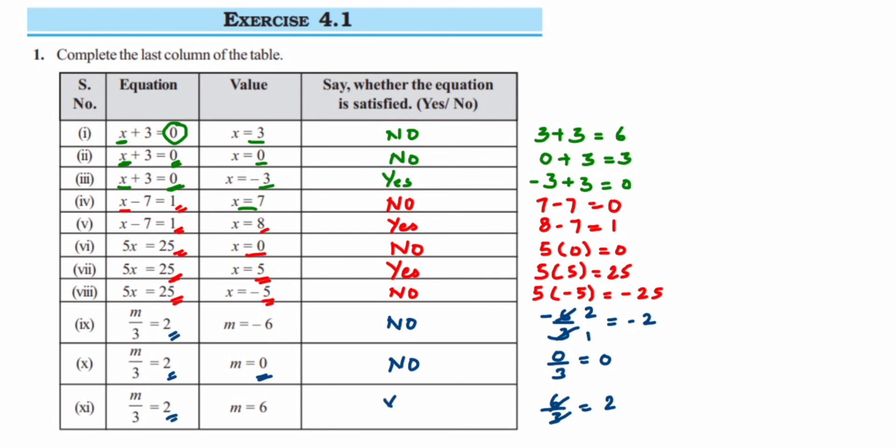So it was a very simple question. You have to just substitute in the given equation the values and see if LHS and RHS are equal or not, and give the answer according to that. I hope you have understood. In case you have a question or doubt, you can drop a comment below. Thank you so much for watching.